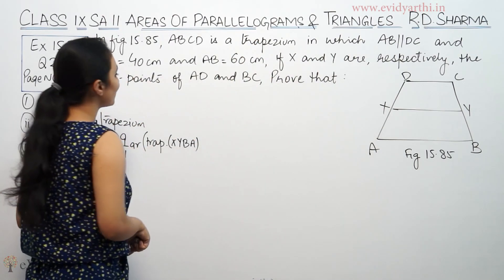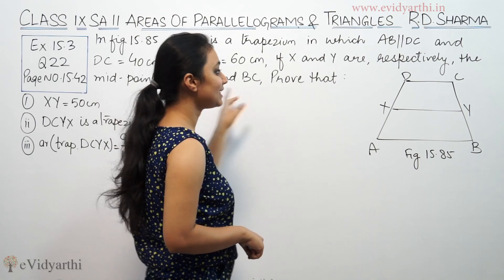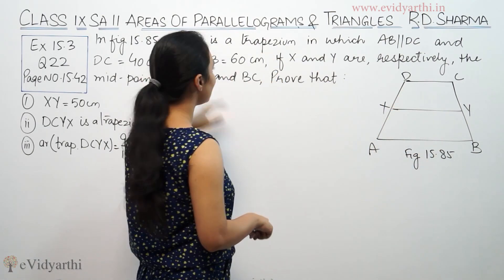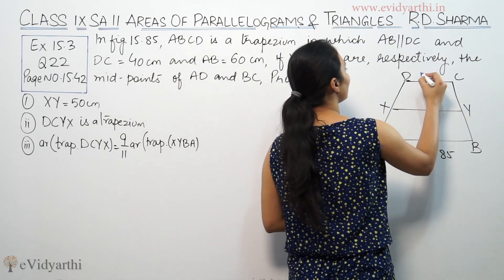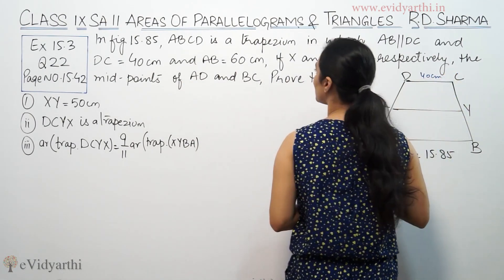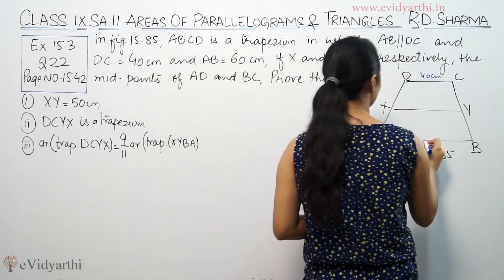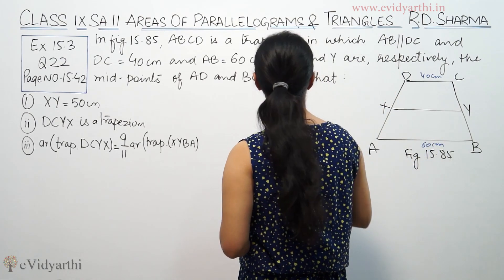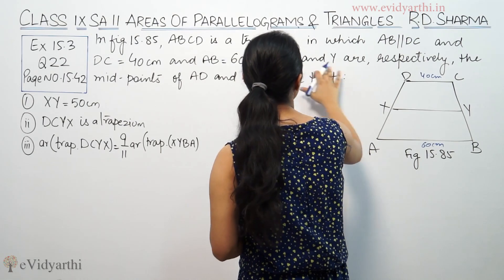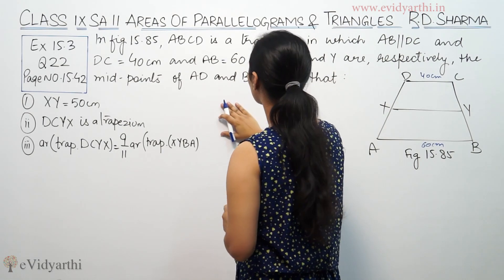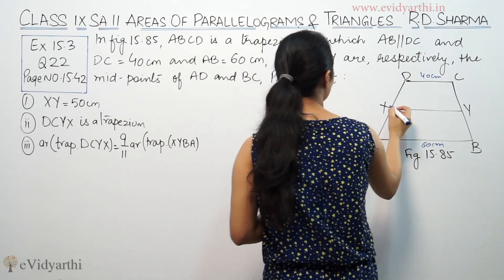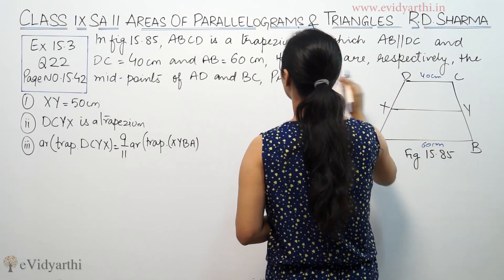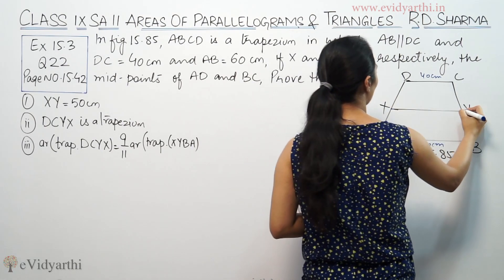In figure 10.85, ABCD is a trapezium, meaning DC is parallel to AB, and BC is 40, AB is 60. X and Y are respectively midpoints of AB and BC. X is the midpoint of AB and Y is the midpoint of BC.